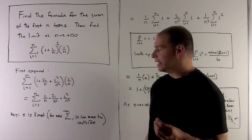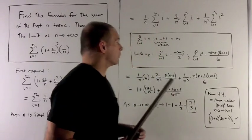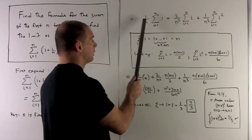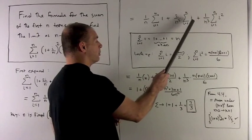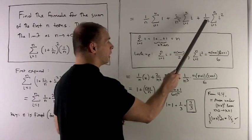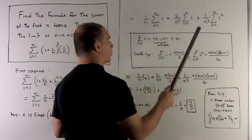So n is fixed, which means as far as the summation is concerned, we could just slip it on through to the outside. That's going to make this a lot easier to look at. So when I do that, the 1/n pulls out my first term, leaving me with a 1. The 2 over n squared can pull out, leaving me with the summation of i. And then the 1 over n cubed can be pulled out, leaving me with the summation of i squared.